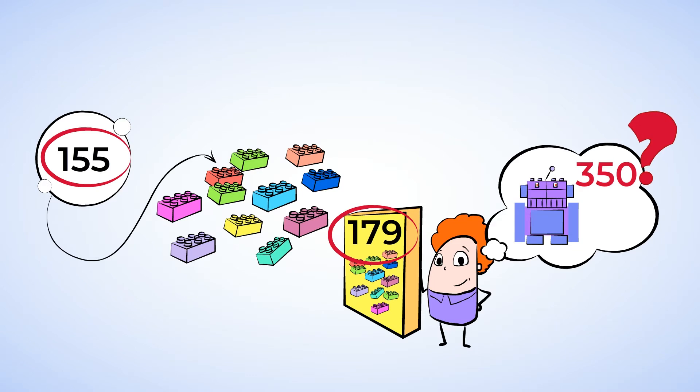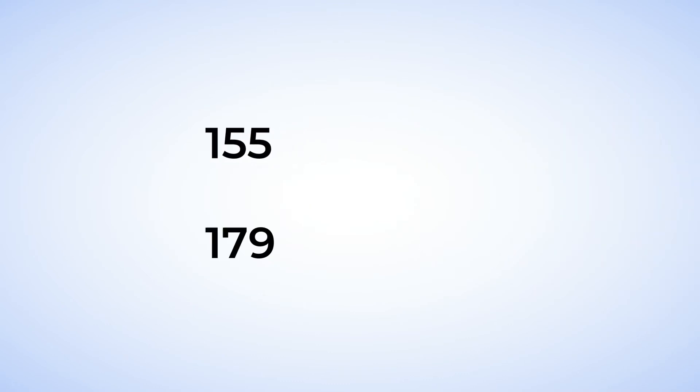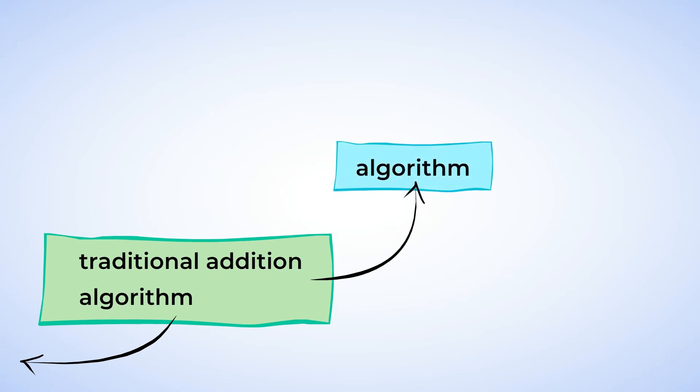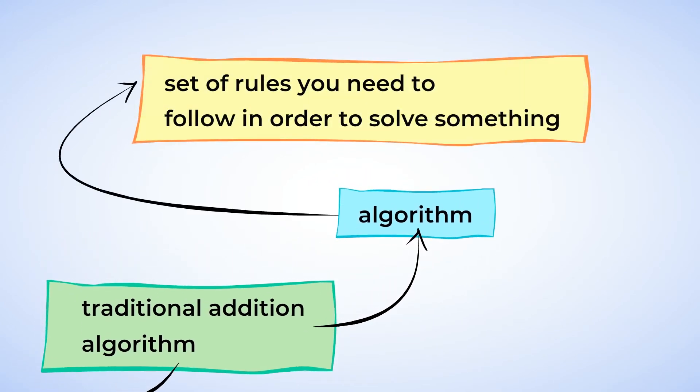In order to know if you have enough Lego pieces to build the robot, you're going to have to add 155 to 179. Okay, let's do this using the traditional addition algorithm. An algorithm is just a fancy word that means a set of rules you need to follow in order to solve something.